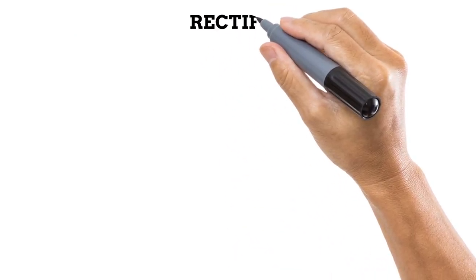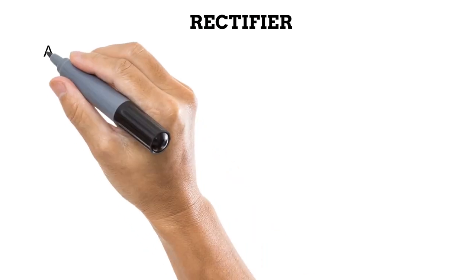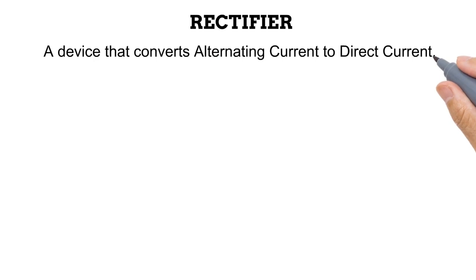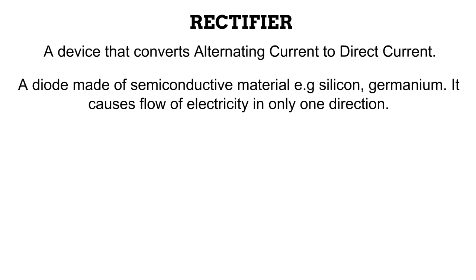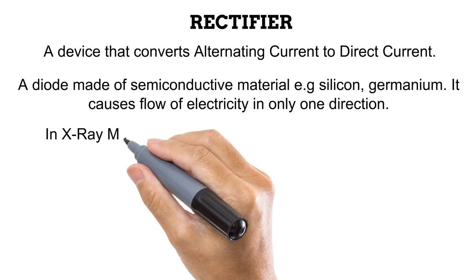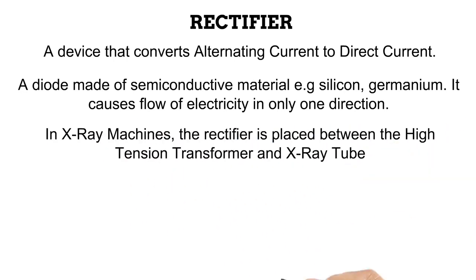As we have stated earlier, electricity flowing from the national grid is usually an alternating current. However, most devices, including X-ray tube, need direct current. A rectifier is a device that converts alternating current coming from the national grid to direct current needed by many devices. It is a diode made of a semiconductor like silicon or germanium, and it causes electricity to flow in only one direction, as direct current would. In X-ray machines, the rectifier is normally placed between the high-tension transformer and the X-ray tube.